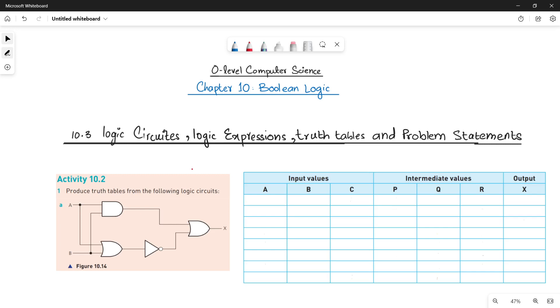The activity says that produce truth tables from the following logic circuits. In part A there is one logic circuit that is given to you and I have also pasted a truth table in front of me, so I will make a little changes in the truth table and show you how it is going to be filled.